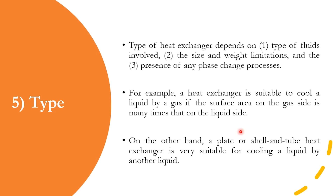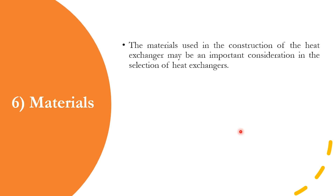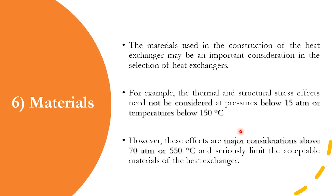Materials of construction play a vital role in heat exchanger selection and cost estimation. They do not play much of a role when pressures are below 15 atm or temperatures below 150°C, but they are a very major consideration when temperatures are above 550°C and pressures are above 70 atm — and can seriously limit the acceptable materials. Accordingly, there are specific ranges for selection regarding temperature and pressure requirements.